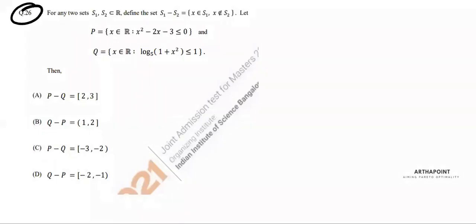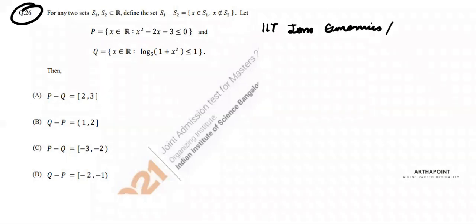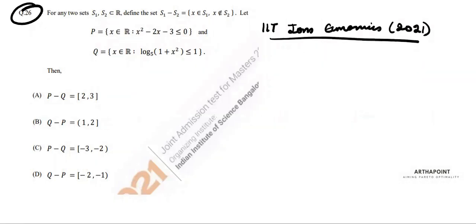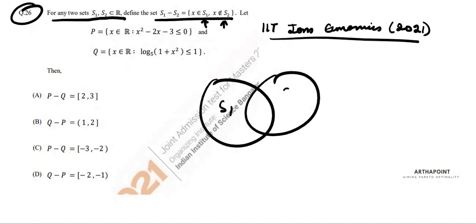This is question number 26 of IIT JAM Economics 2021 paper. The question defines any two sets S1 and S2, and defines the set S1 minus S2. S1 minus S2 contains anything that belongs to S1 and not to S2 — that is, the part in S1 but outside S2.